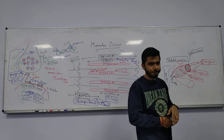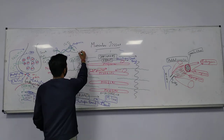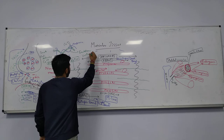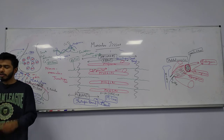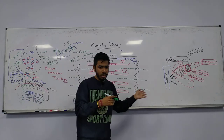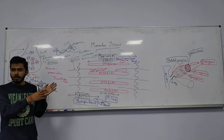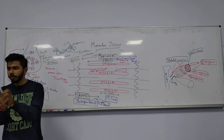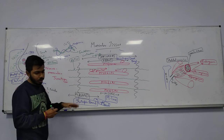This whole mechanism is called excitation-contraction coupling. So far we have covered skeletal, cardiac, and smooth muscles; the nomenclature of skeletal muscle (perimysium, endomysium, epimysium); the sarcomere diagram; isotonic and isometric contraction; the neuromuscular junction; and excitation-contraction coupling.